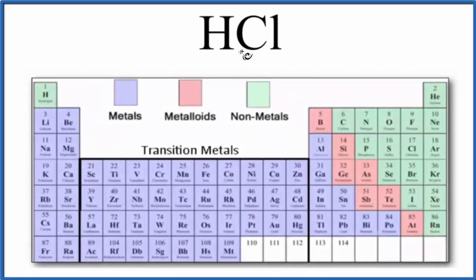In this video, we'll look at whether HCl is ionic or covalent. So the short answer is this is a covalent compound. It's actually polar covalent. Let's look at what that means.